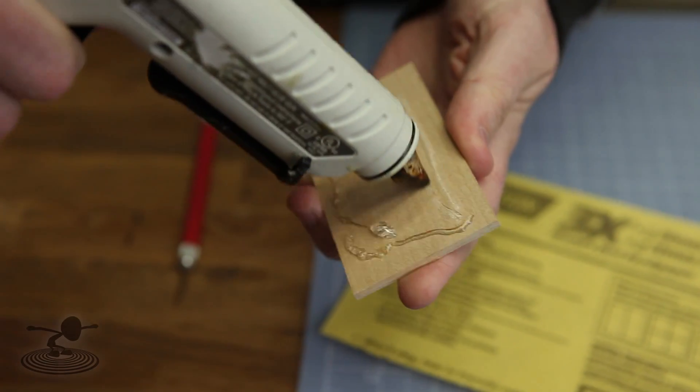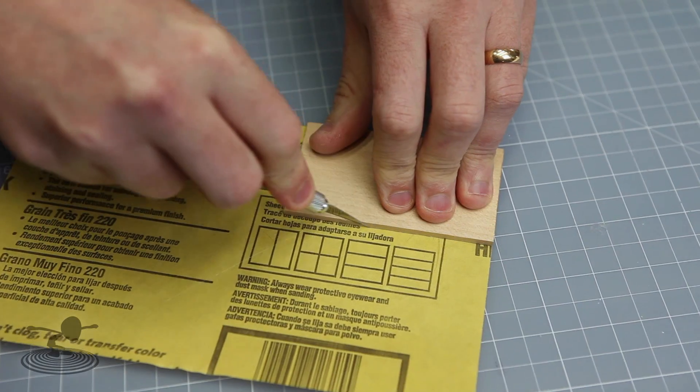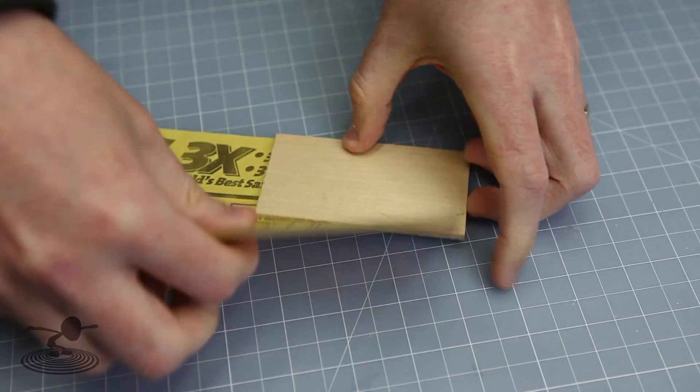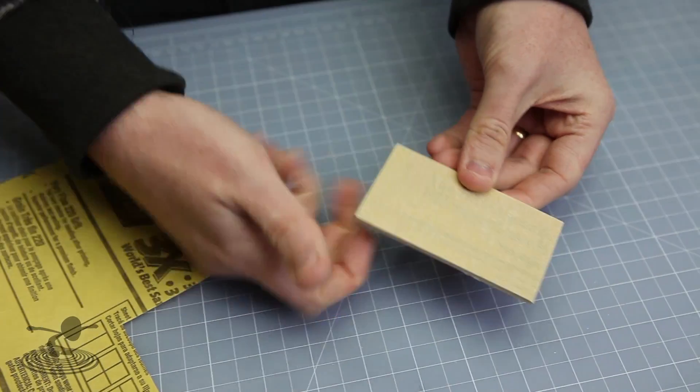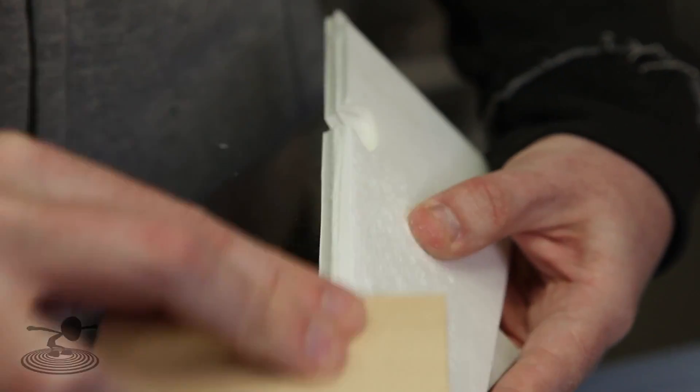Get a small wood block, squirt some hot glue on it, attach your sandpaper, trim away the excess, and now you've got a nice little sanding block that's safe for the kids and easy to use.